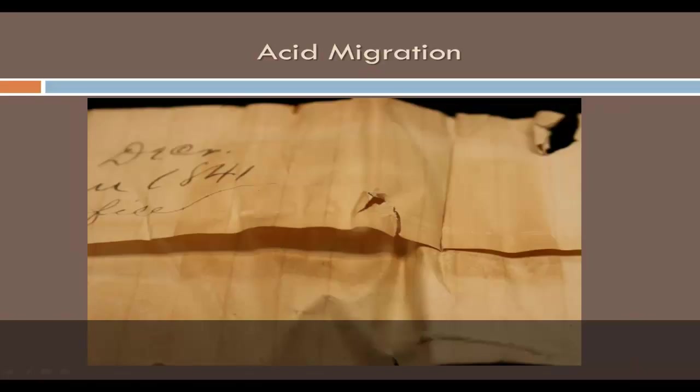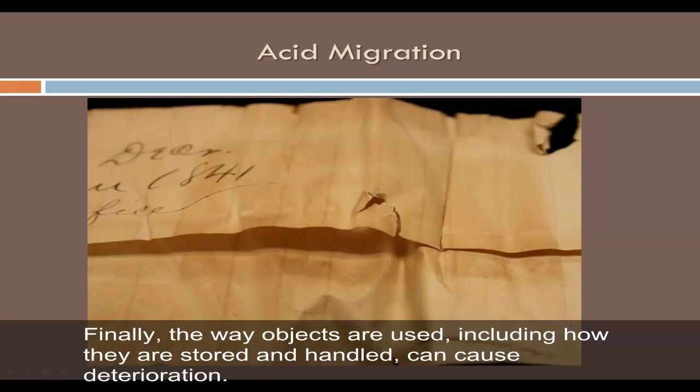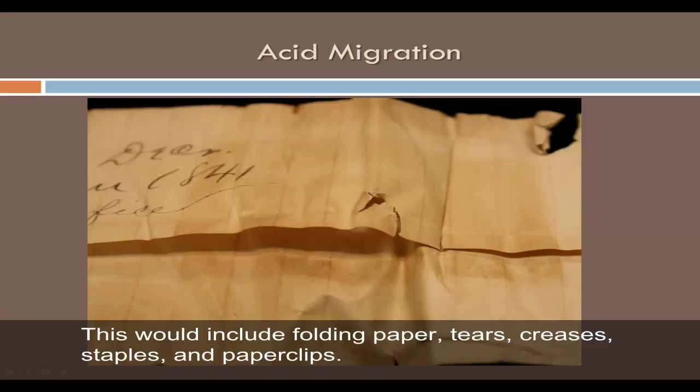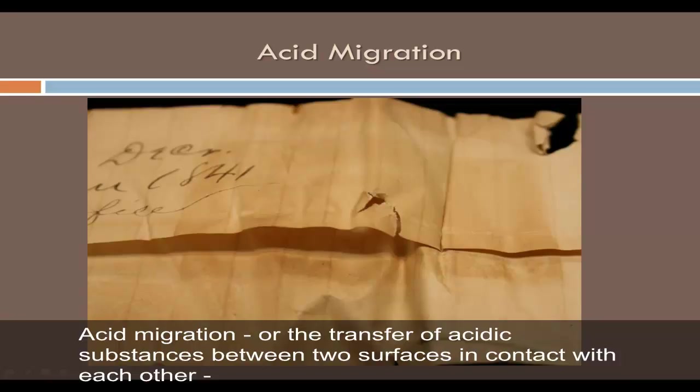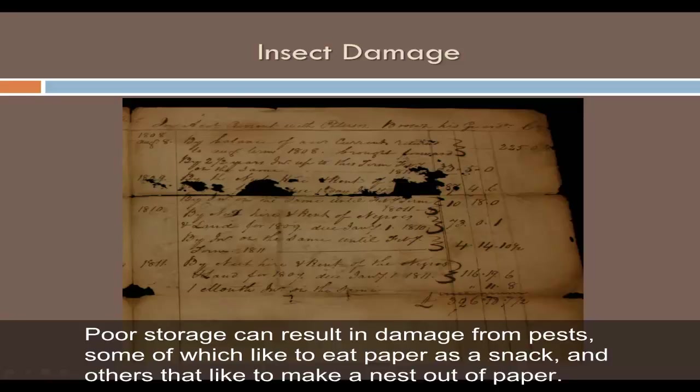Finally, the way objects are used, including how they are stored and handled, can cause deterioration. This would include folding paper, tears, creases, staples, and paper clips. Acid migration, or the transfer of acid substances between two surfaces in contact with each other, can occur from adjacent materials. Poor storage can result in damage from pests, some of which like to eat paper and others that like to make a nest out of paper.